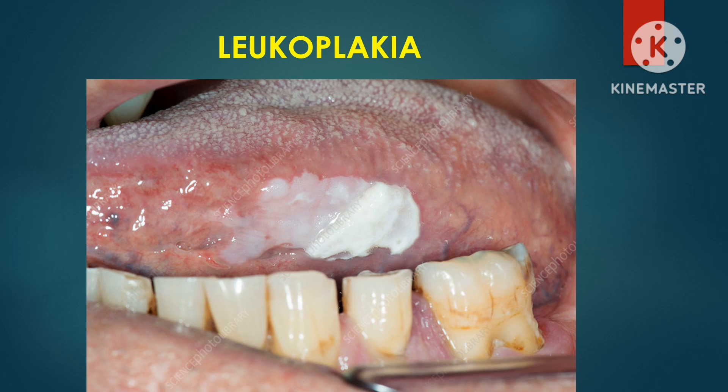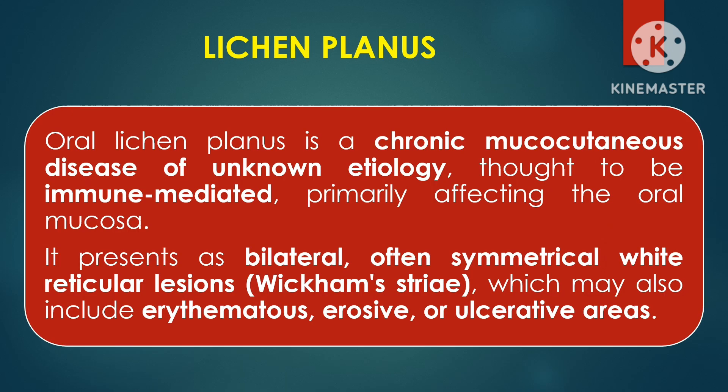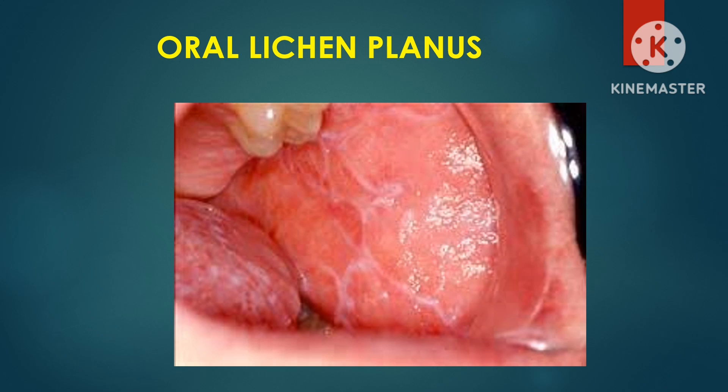According to Shafer's textbook of oral pathology and the WHO definition, oral lichen planus is a chronic mucocutaneous disease of unknown etiology, thought to be immune-mediated, primarily affecting the oral mucosa. It presents as bilateral, often symmetrical, white reticular lesions — also known as Wickham's striae — which may also include erythematous, erosive, or ulcerative areas.